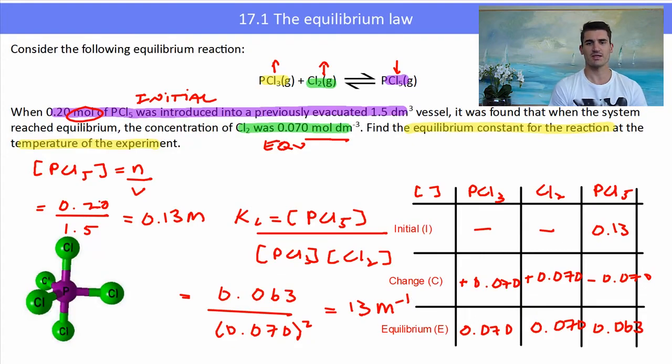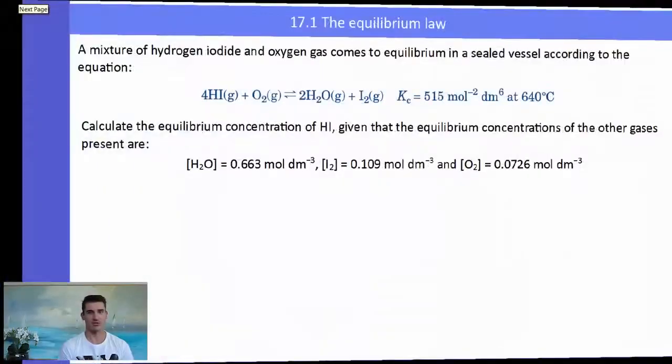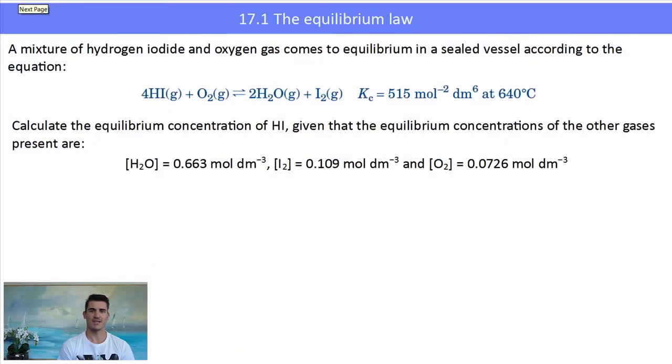The next one's a little bit different—we need to work out a concentration. We've been given an equation and the K value for this reaction. Calculate the equilibrium concentration of HI given that the equilibrium concentrations of the other gases are given below. Here we need to use our Kc value, sub that into the equilibrium expression, and rearrange it to find the thing we want. In this case, it's the concentration of HI.